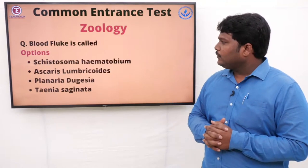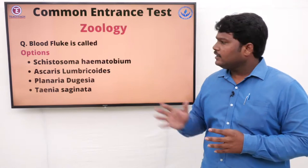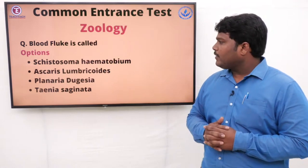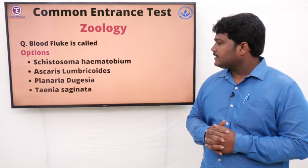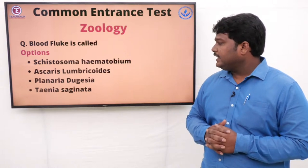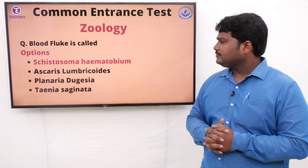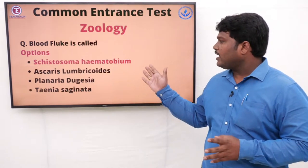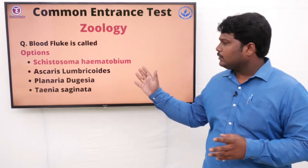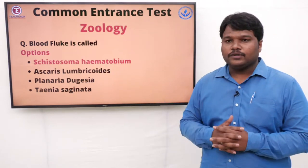Question 36: Blood fluke is called. Options: A) Schistosoma haematobium, B) Ascaris lumbricoides, C) Planaria, D) Taenia saginata. The right answer is Schistosoma haematobium. Schistosoma haematobium is the blood fluke.